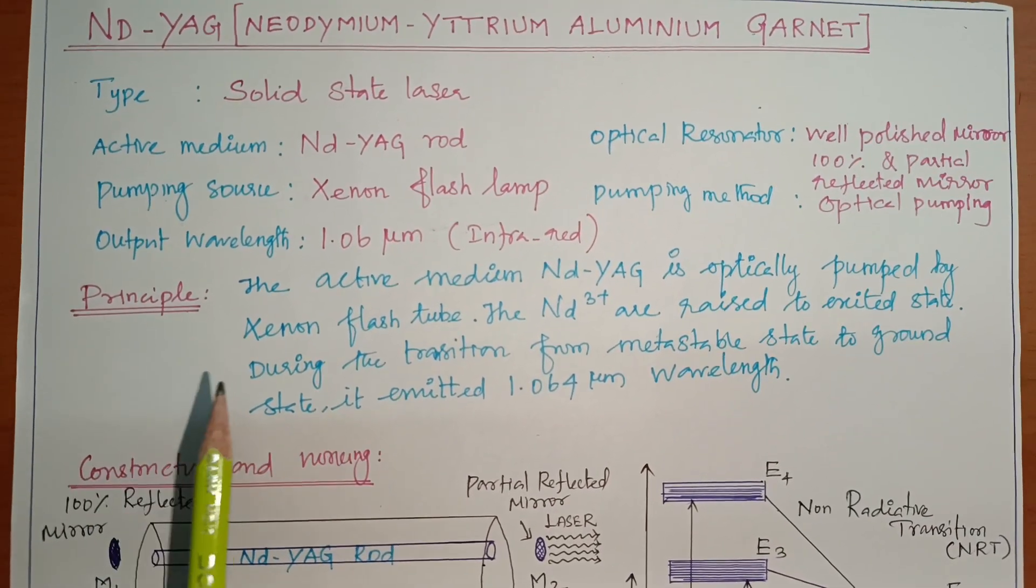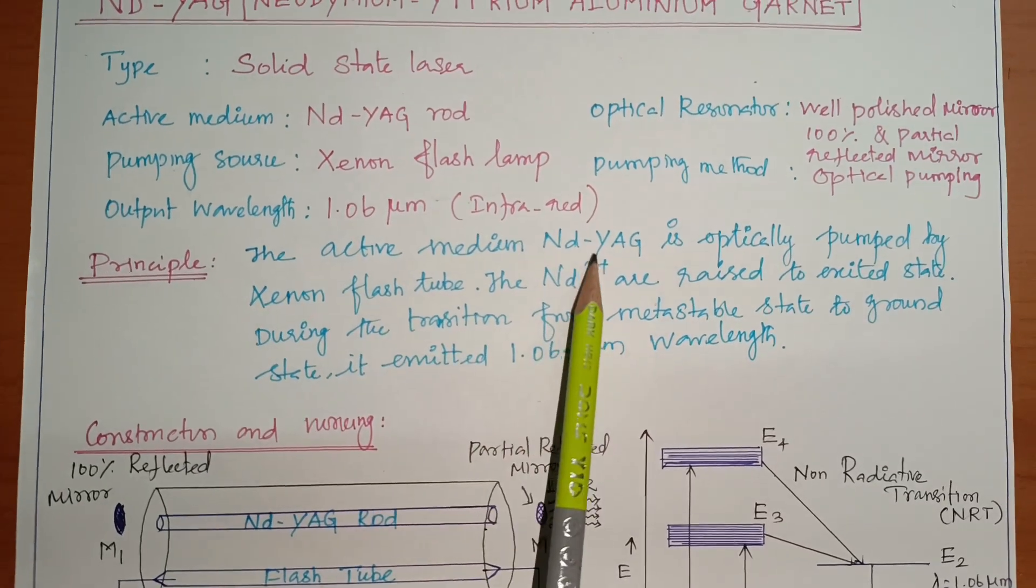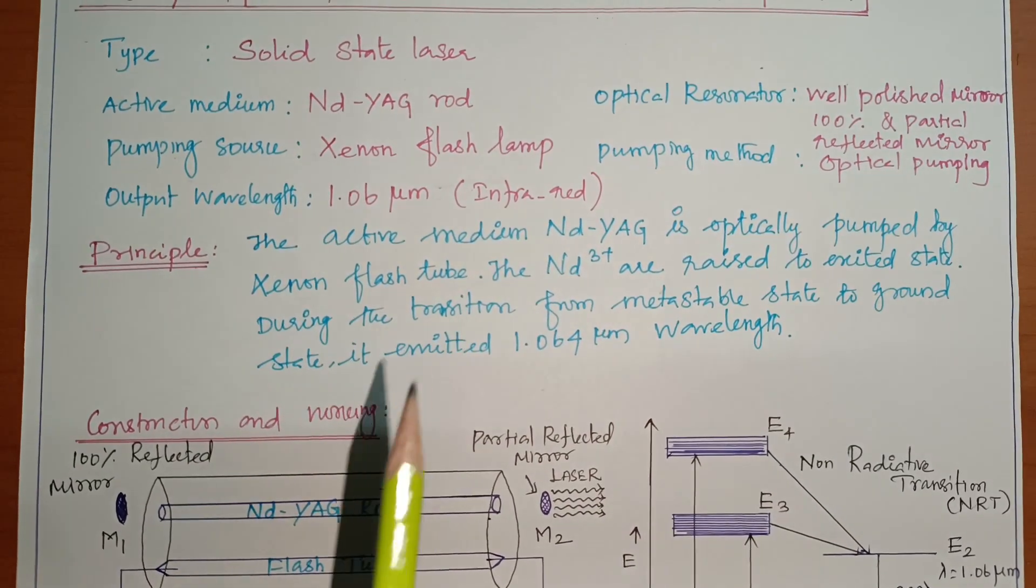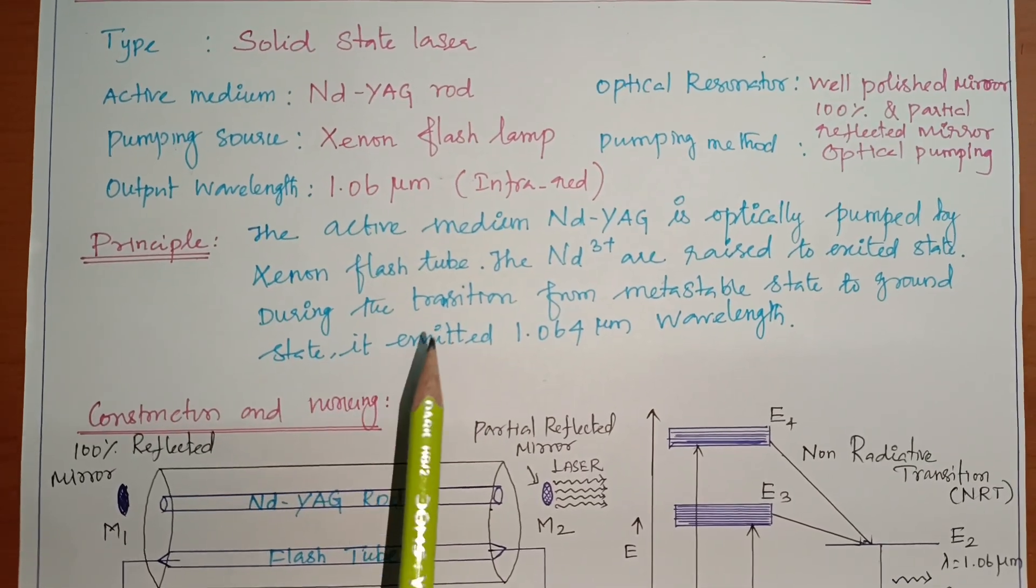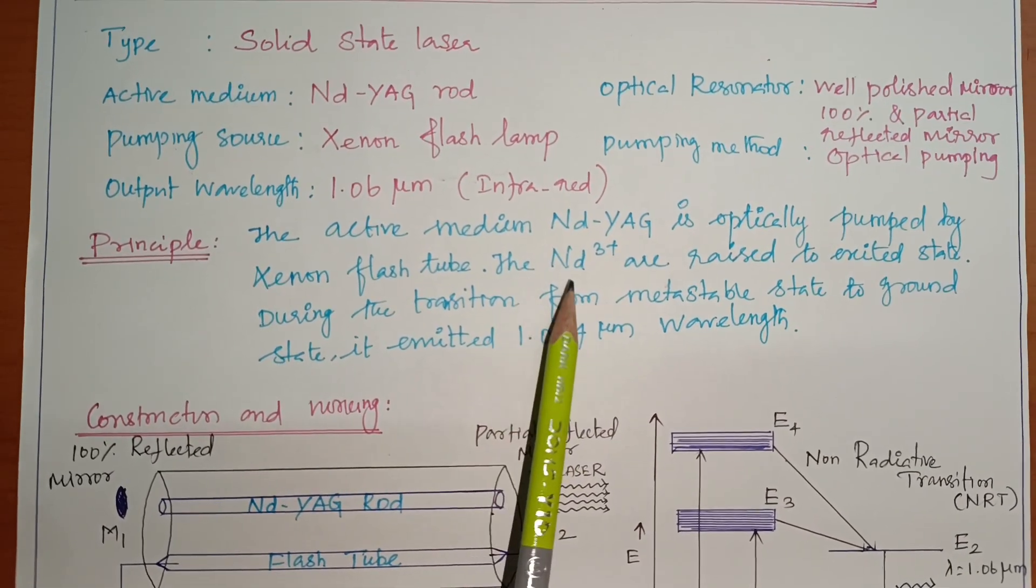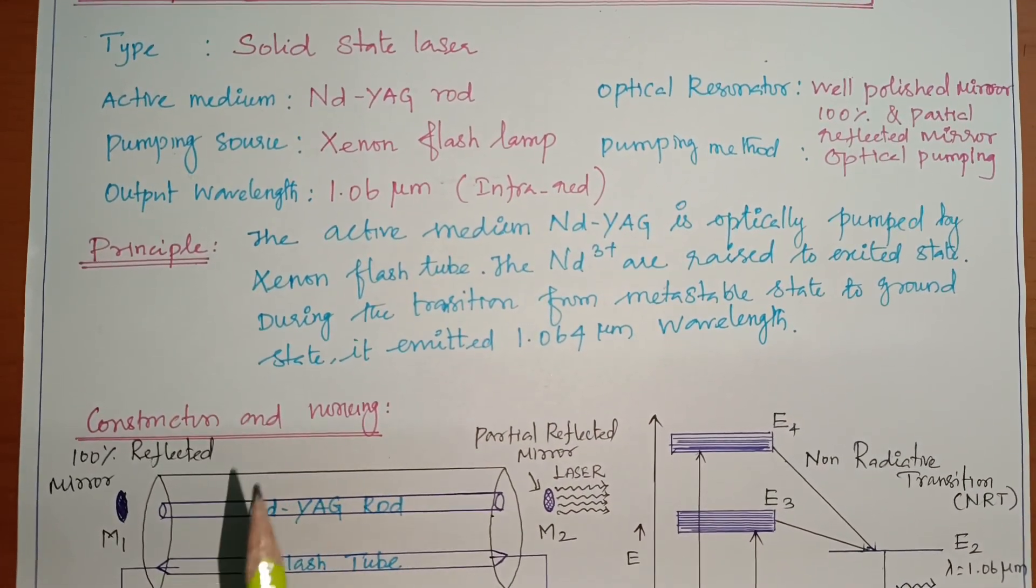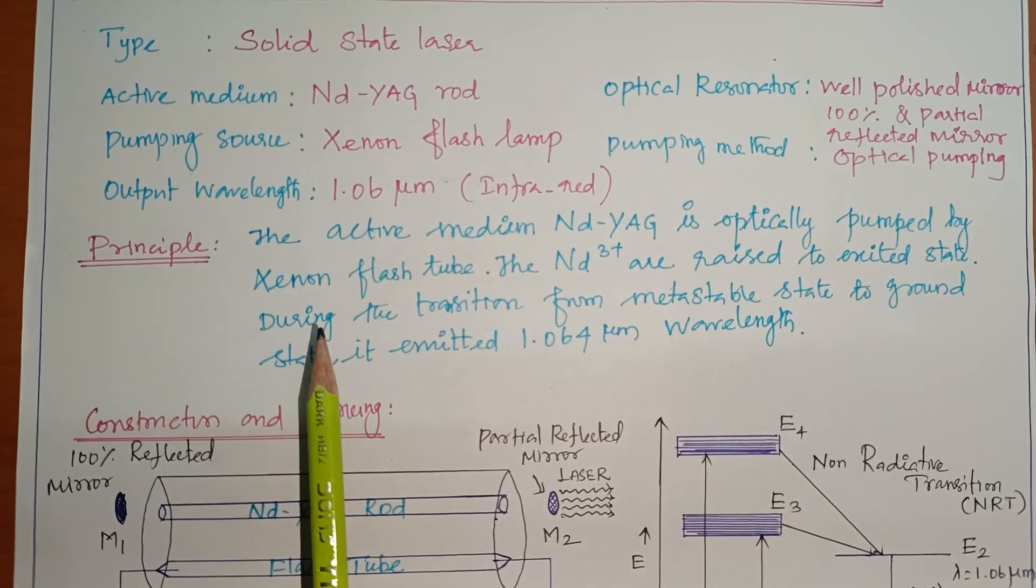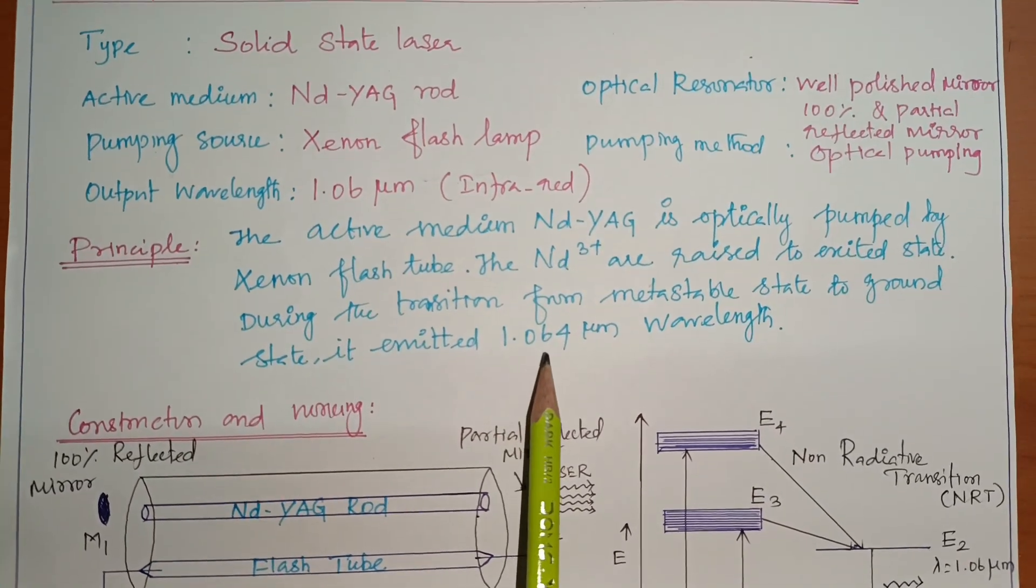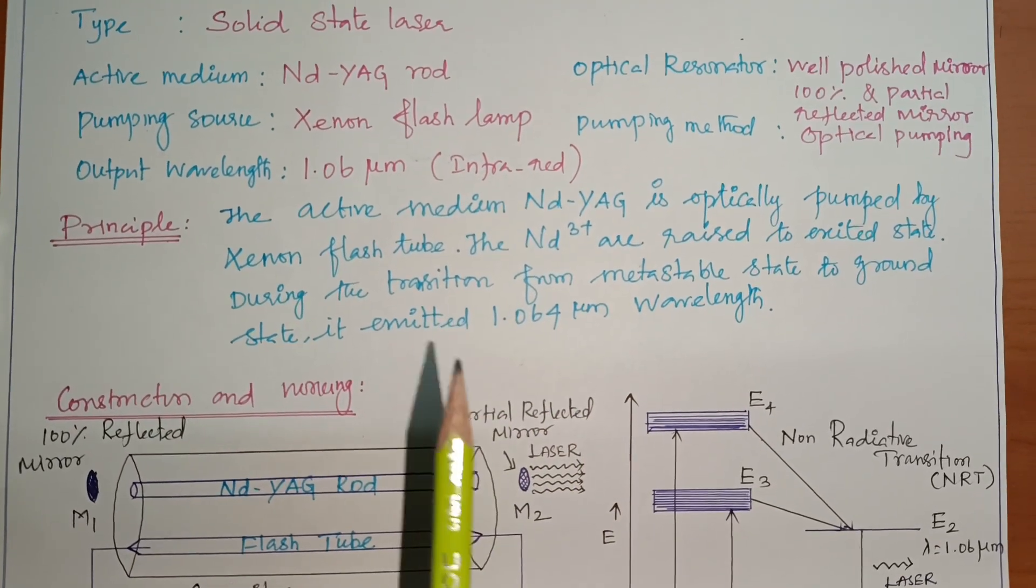So now first one is principle. Here the active medium of Nd:YAG is optically pumped by xenon flash tube. So xenon flash tube which optical pumping is done in the Nd:YAG rod. Now the neodymium ions rise to excited state. Neodymium ions are in the excited state.